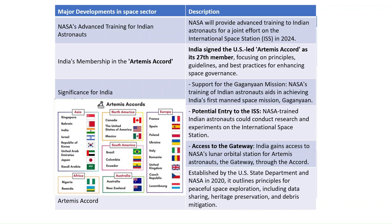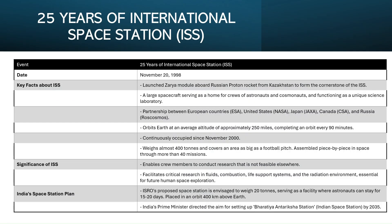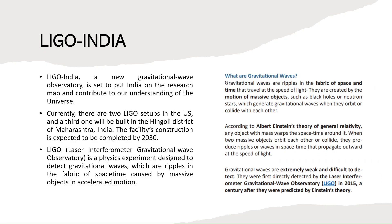The International Space Station has completed 25 years. It is a partnership between European countries, the United States, Japan, Canada, and Russia. LIGO India is a new gravitational wave observatory to be set up in India — the third LIGO setup after two in the US — to be built in Hingoli district of Maharashtra. LIGO stands for Laser Interferometer Gravitational-Wave Observatory and is used to detect gravitational waves.